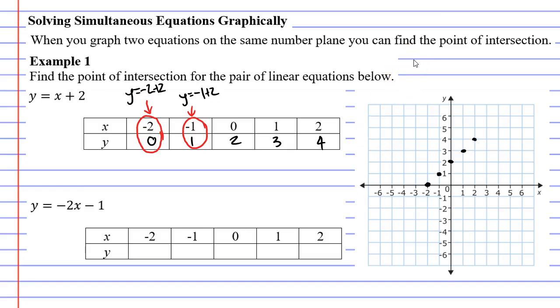When x is one, y is three, and when x is two, y is four. I want to connect these with a straight line that has arrows at each end like so. So let's move on to the next equation, y equals negative two x minus one.